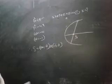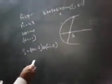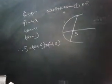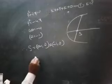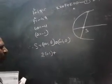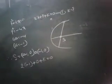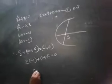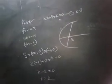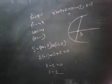Substituting S equals (minus 1, 0) into 2x plus y plus k: 2 times (minus 1) plus 0 plus k equals 0, giving k minus 2 equal to 0. Therefore k equals 2.